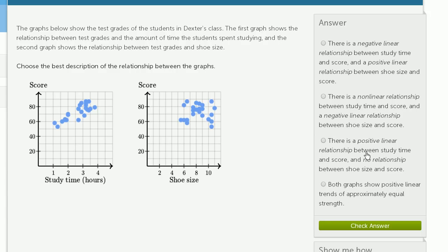There is a positive linear relationship between study time and score, that's right. And no relationship between shoe size and score. Well I'm going to go with that one.